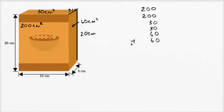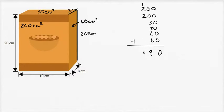Now we can add all of these together: 200, 200, 30, 30, 60, and 60. Adding those up gives us 580 square centimeters as the surface area of this box.